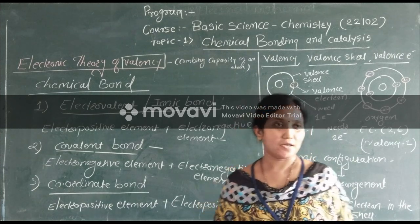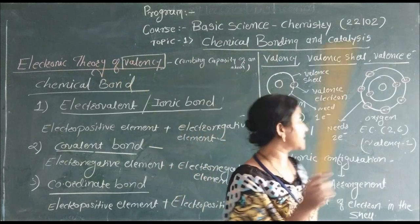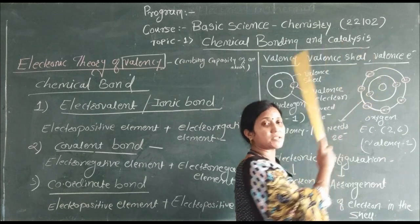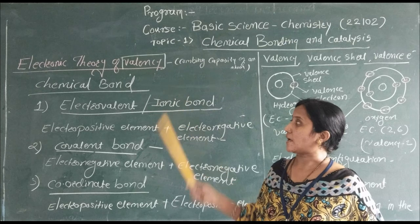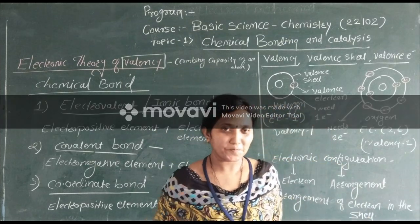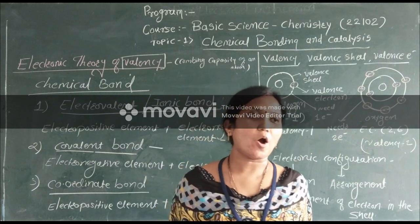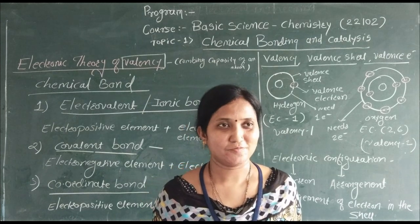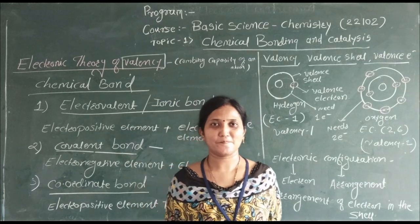To summarize what we discussed today: the Electronic Theory of Valency, the concept of valence shell and valence electrons with examples, and then chemical bonds and types of chemical bonds. I hope you understood all these points. Thank you all.